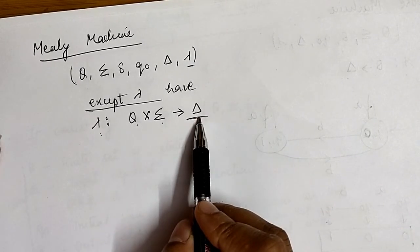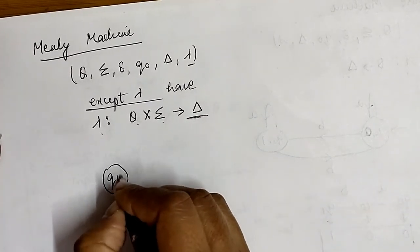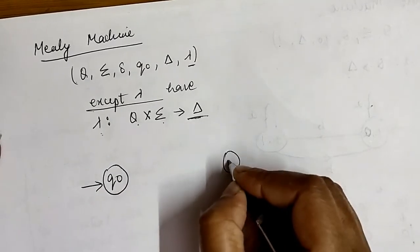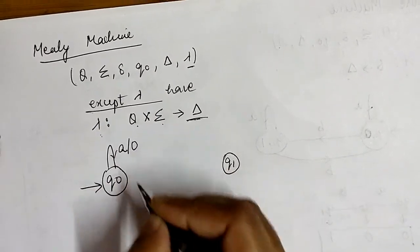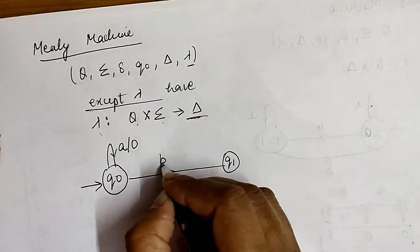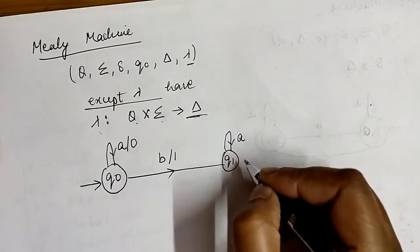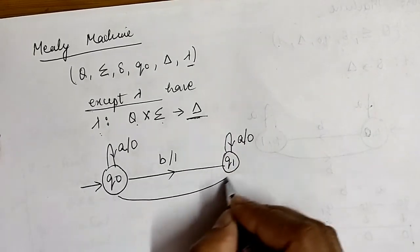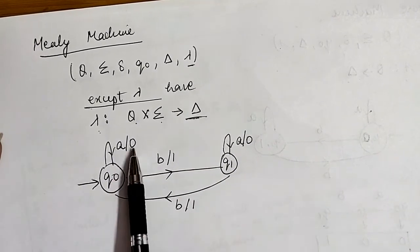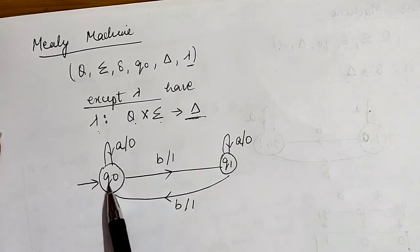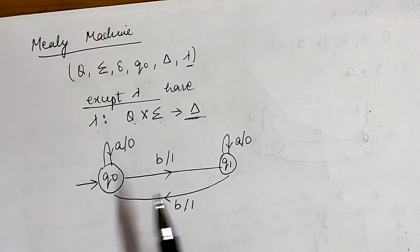So in Mealy machine, lambda is a function such that for a given state and given input, the output is associated. Suppose we have a state q0 as the initial state and another state q1. On giving input a the output will be 0, on input b the output will be 1 from q0. On q1, on input a the output will be 0 and on input b the output will be 1. So the output is associated with the input, not with the state as in the Moore machine.